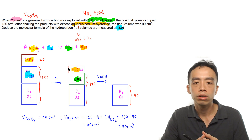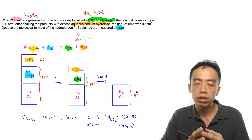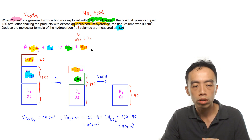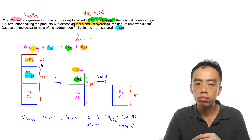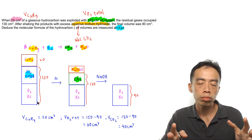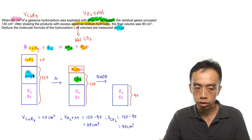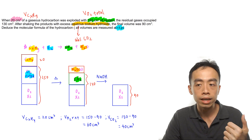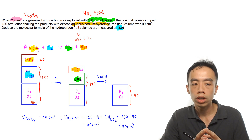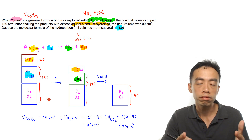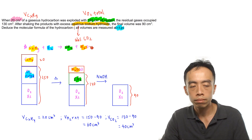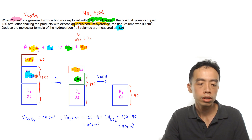Let's visualize this using a diagram. We have the combustion: CₓHᵧ plus O₂ giving CO₂ and water. At the beginning we have 20 cm³ of hydrocarbon plus 150 cm³ of oxygen. Oxygen is split into two portions: O₂ reacted and O₂ in excess — totaling 150 cm³. The combustion between hydrocarbon and the reacted O₂ produces CO₂ and water. All the hydrocarbon and all the reacted oxygen are consumed, converted to these products.